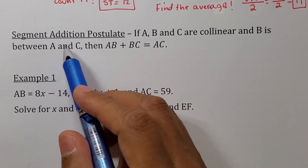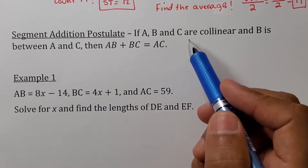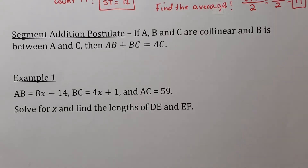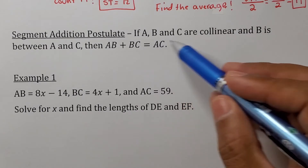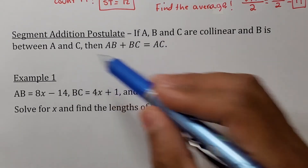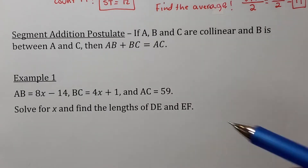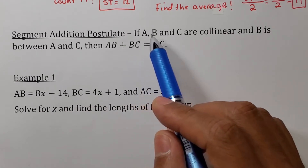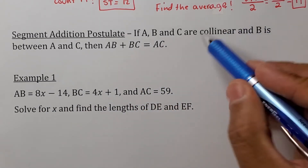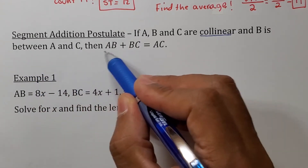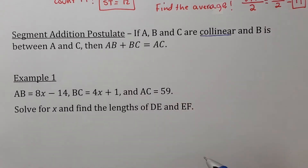I'm going to read this first — I know it's not going to make sense right away. In geometry, we try to give ourselves a visual so we can understand. If my brain is able to physically see what the words are saying, it's able to understand and start solving the problem. This is called the Segment Addition Postulate. It says: if points A, B, and C are collinear — collinear means on the same line — and B is between A and C, then AB plus BC equals AC.